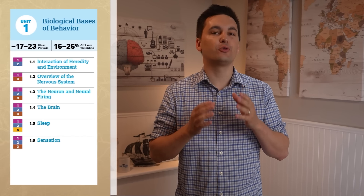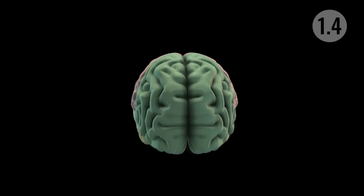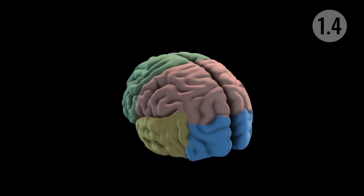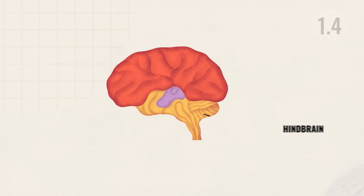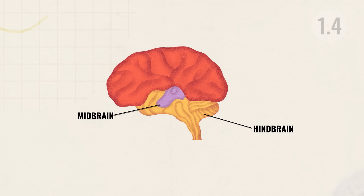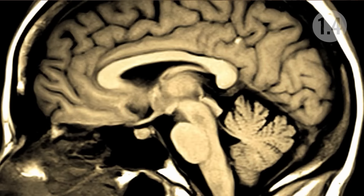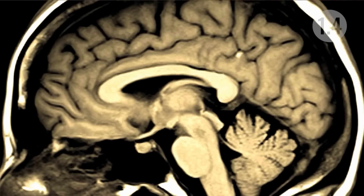Now it's time to talk about the different structures of the brain. When looking at the brain, we can see three major regions: the hindbrain, located at the bottom; the midbrain, located in the center; and the forebrain, which is the top of the brain and what most people visualize. Let's explore the different structures that make up each of these regions.